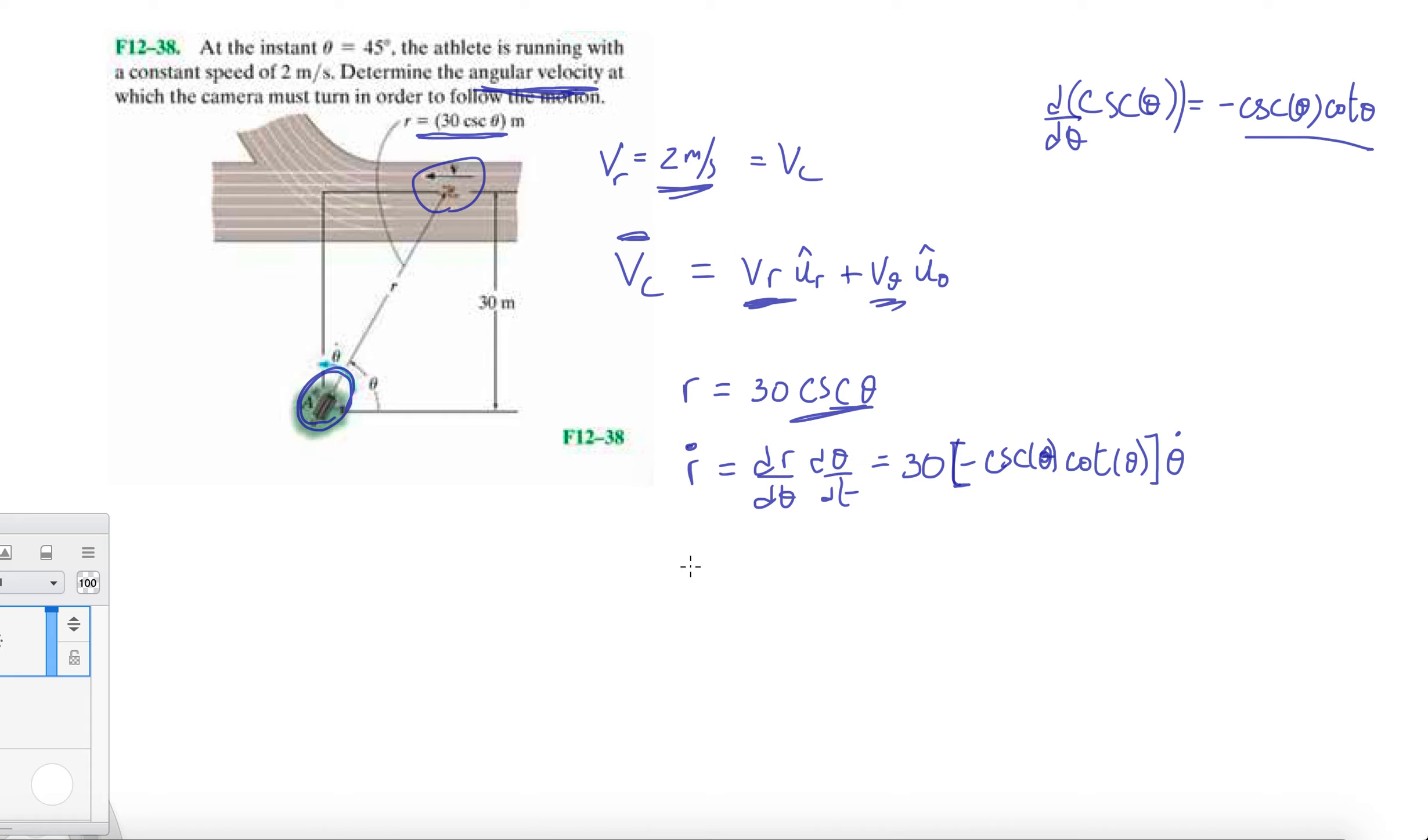What else are we missing? We know VR is r dot and the transverse component is r theta dot. So we know this is going to be 30 times minus cosecant pi over 4, cotangent pi over 4, times theta dot.